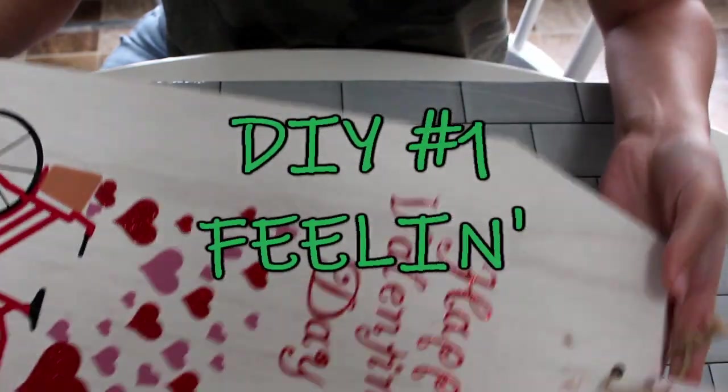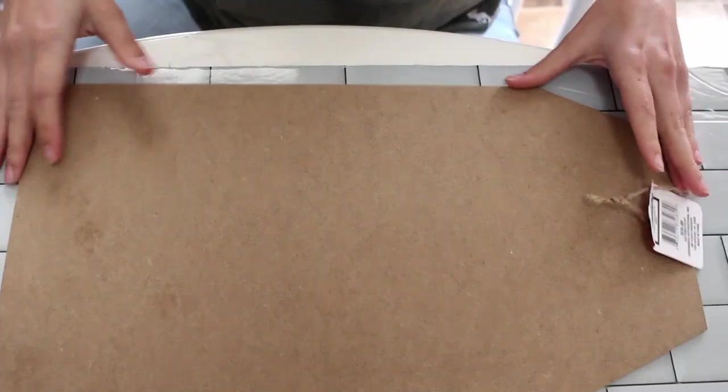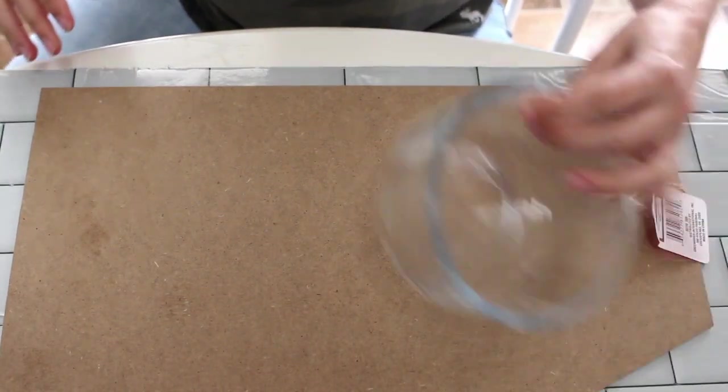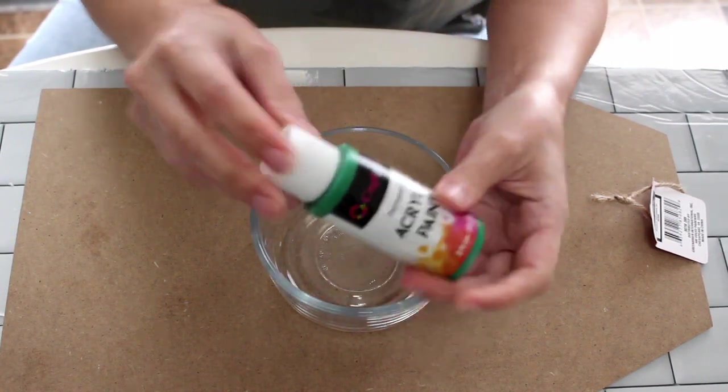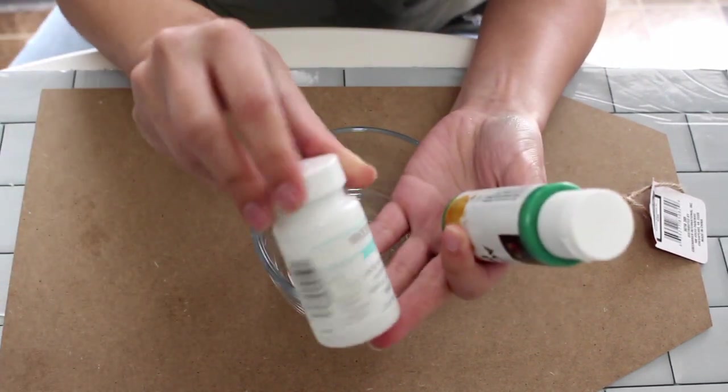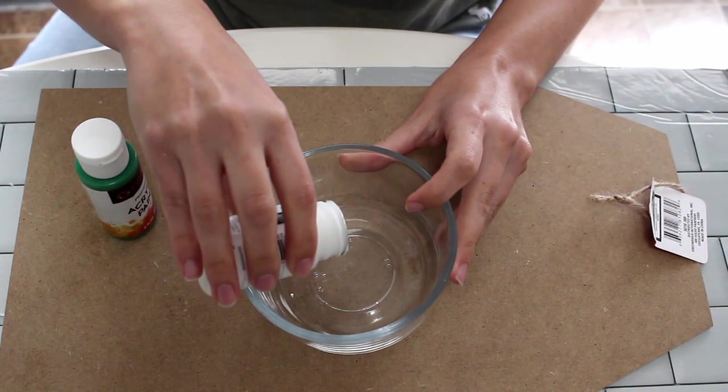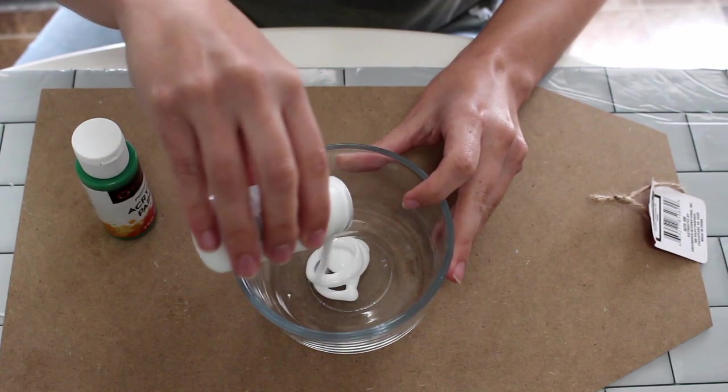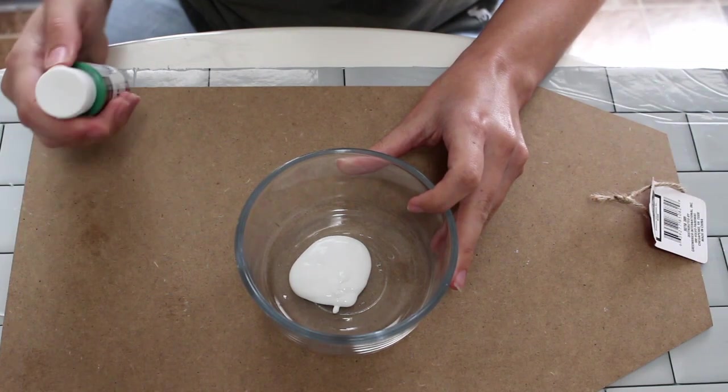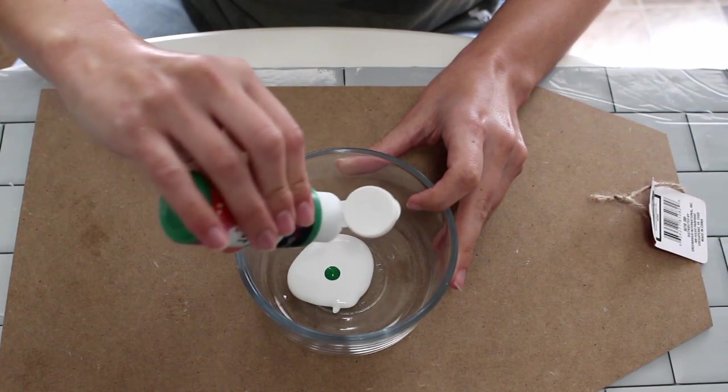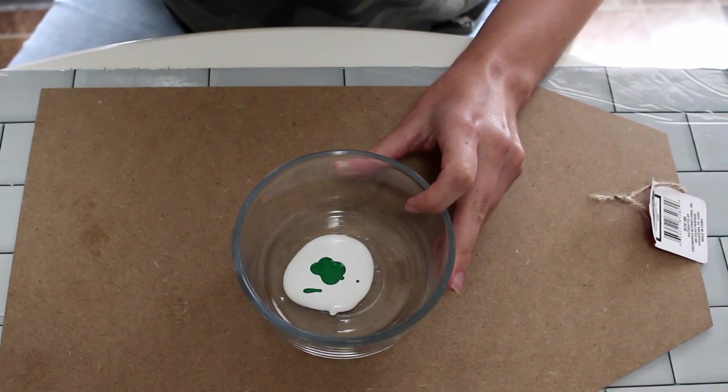For this first DIY, we're going to call it Feeling Lucky and we're going to take one of these tag signs that you can find over at Dollar Tree. They had them out during Valentine's Day and we're going to flip it over. We're going to use the side that doesn't have anything on it and then we're going to take some white paint as well as some green paint and mix those together until we get the desired color. If you already have a green colored paint that you really like, you can go ahead and use that instead.